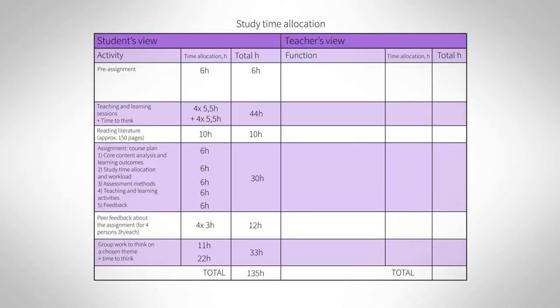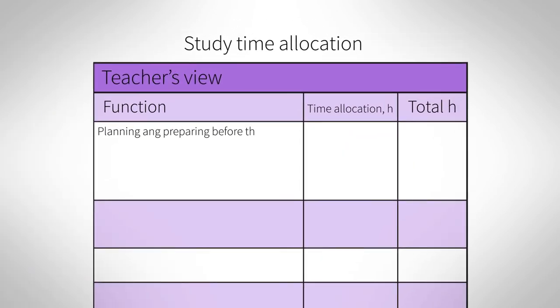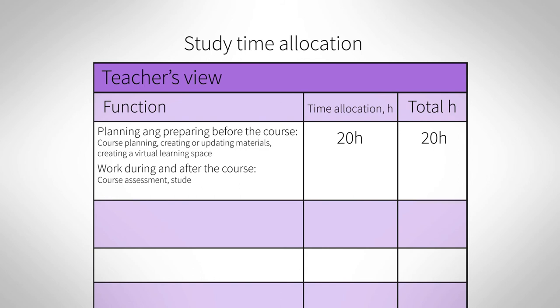It is good for teachers to also calculate their own workload and the time they need to allocate for teaching. From the teacher's part, the course preparation starts before the course actually begins. Sometimes the whole course needs to be planned from the beginning and this takes its own time. However, let's consider that our example course is an existing course that only needs some updating. The 20 hours is an estimation of time needed to plan and prepare for the course, based on previous experience. Also, work during and after the course related to student guidance and study administration needs to be taken into consideration. In this case, we estimate that 20 hours needs to be reserved for this.